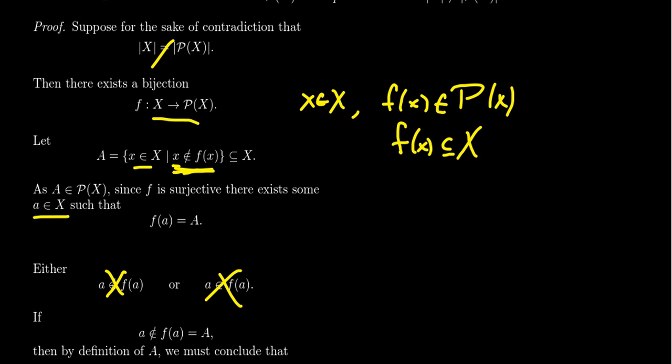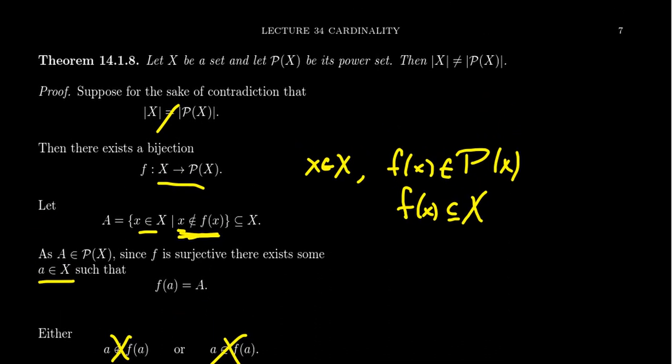It's not possible for a set to have the same cardinality as its power set. In the case where X is infinite, this means the cardinality of an infinite set is distinct from the cardinality of another infinite set — we'll dig into this more next time. That brings us to the end of lecture 34, introducing the proper definition of cardinality. If you learned anything about set cardinality using functions, please like this video, subscribe to the channel, and feel free to post any questions in the comments below.